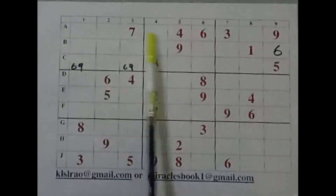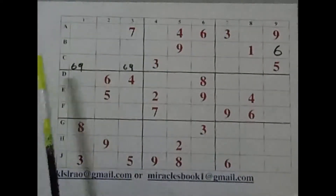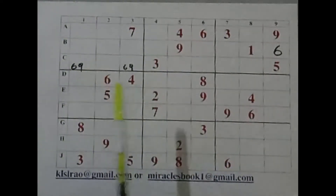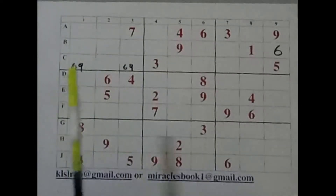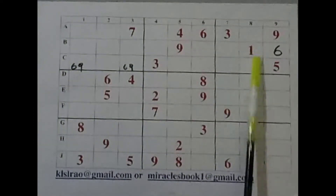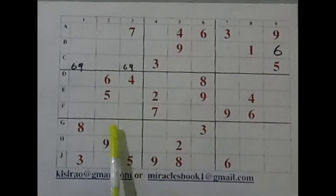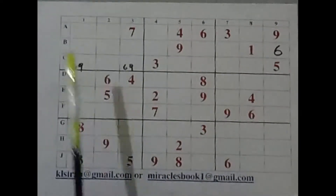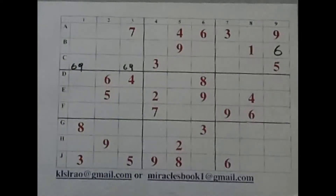By the way, we have got five numbers in row A. Let us see what numbers are required. We require two, five, one, two, five, eight. One here, two here, five here, eight here. Nothing matches there now.